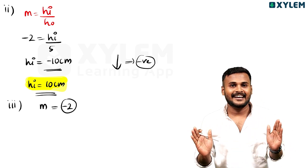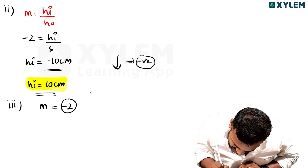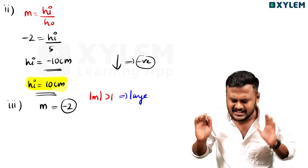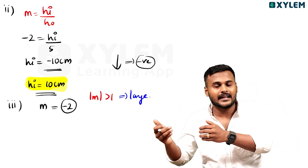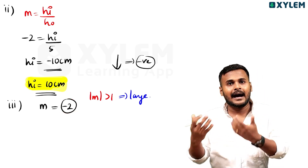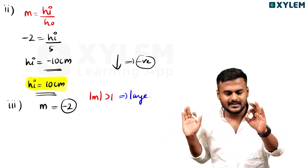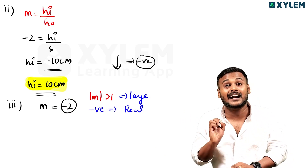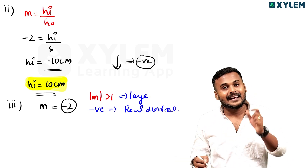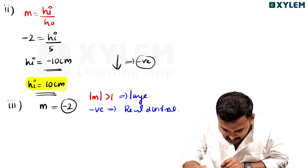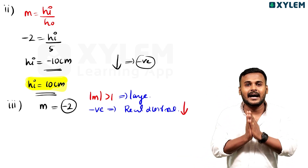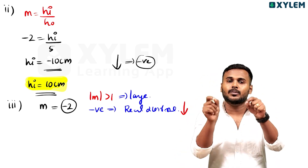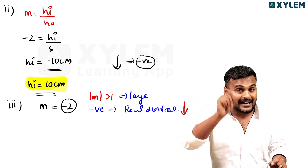Magnification is minus 2. The modulus of M is greater than one, so this is a larger image. Magnification is negative, meaning it is an inverted real image.